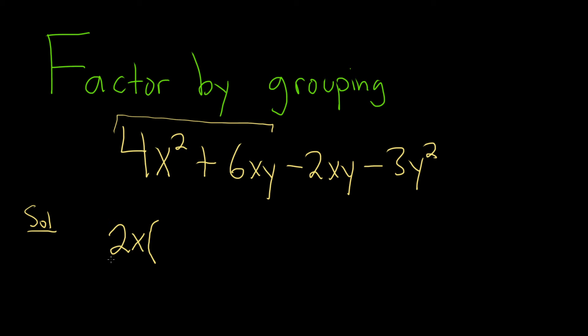So you ask the question, what do you multiply by 2x in order to get 4x squared? Well, 2x. That's because 2 times 2 is 4, and x times x is x squared. Then you ask the question again, what do you multiply by 2x in order to get 6xy?